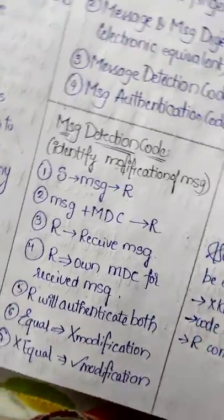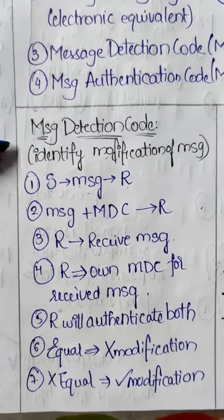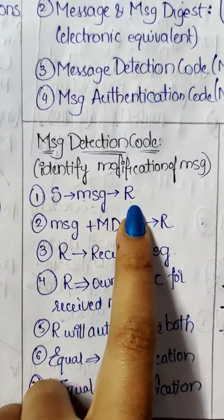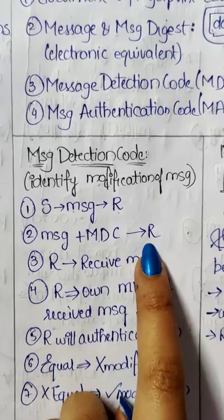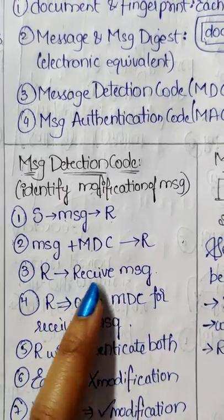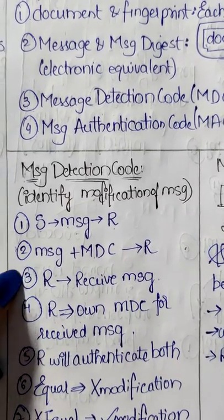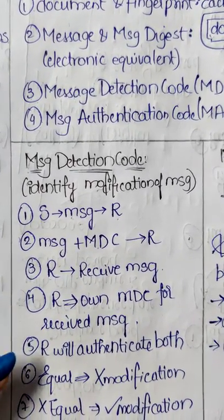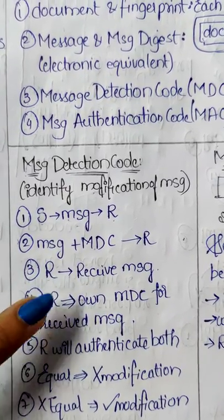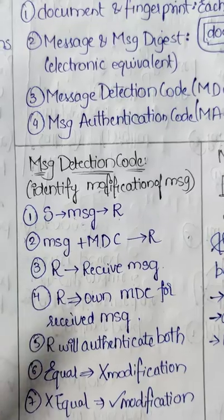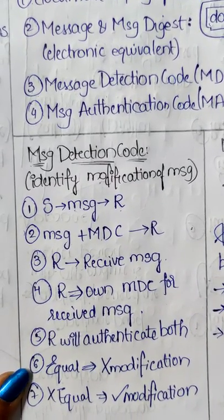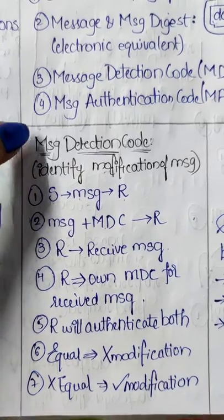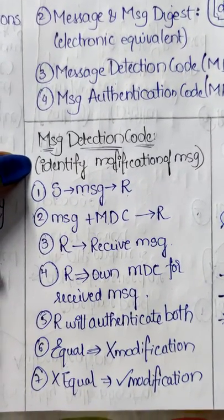Coming to Message Detection Code. S means sender and R means receiver. When sender wants to send the message, he adds Message Detection Code. Receiver receives the message and also generates his own Message Detection Code. He will authenticate both. If both are equal, there is no modification done. If they are not equal, modification is done. This can be written for the question: Message Detection Code identifies modification of a message.